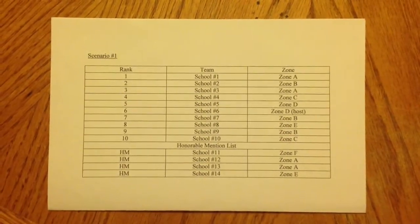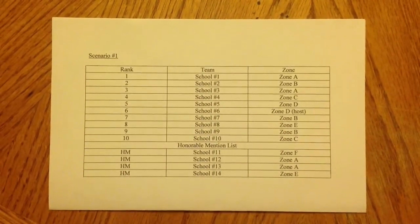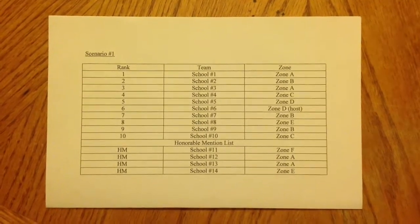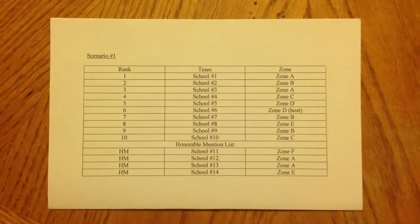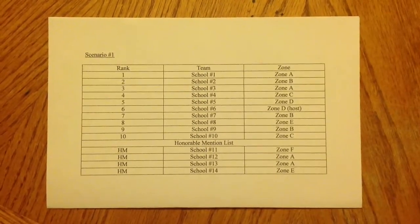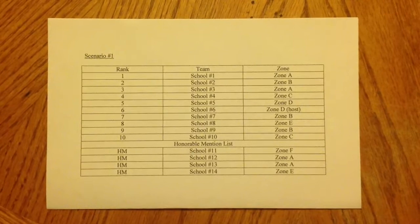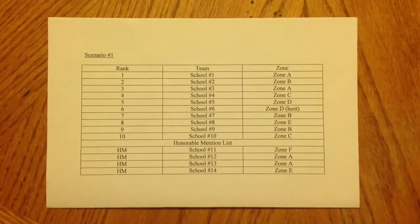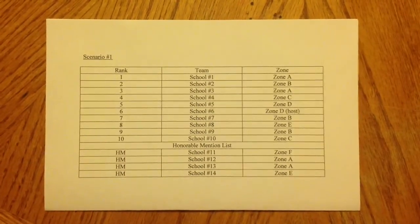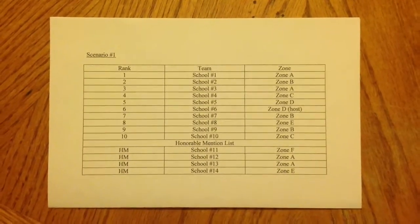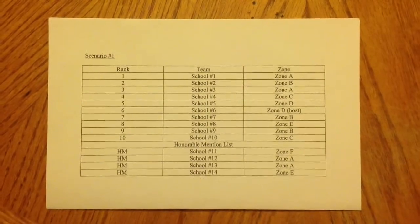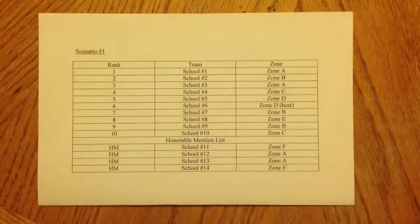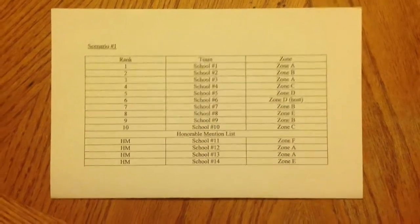What I'm going to do is present two hypothetical scenarios to help explain this. The first scenario is what I would consider to be the most common. The last ranking list done before zone weekend is the list we would use to allocate wildcards, because it would be based on the most data. So here's a hypothetical list.